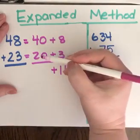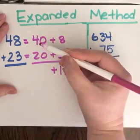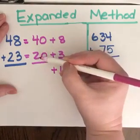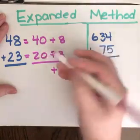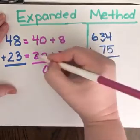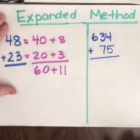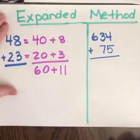Then 40 plus 20. You can do it two different ways. You can do 40 and then count on by 10, so 40, 50, 60. Or you can say 0 plus 0 is 0, 4 plus 2 is 6. So either way should give you the same answer.